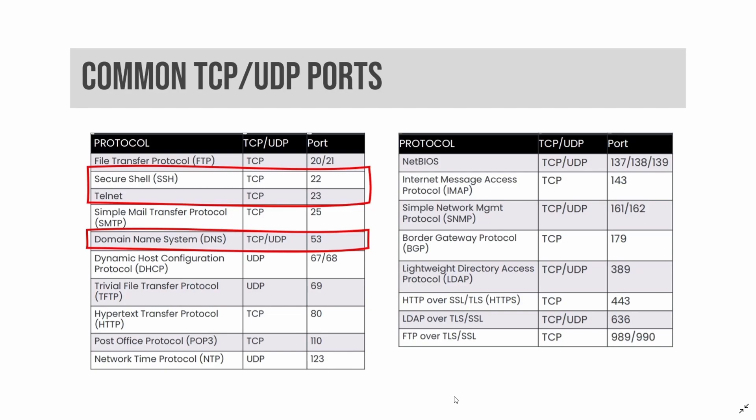SMTP is the Simple Mail Transfer Protocol, used to transfer email between servers. SMTP servers listen on TCP port 25. POP3, also known as Post Office Protocol version 3, and IMAP, also known as Internet Message Access Protocol, are used for client-server email access, using TCP ports 110 and 143, respectively.